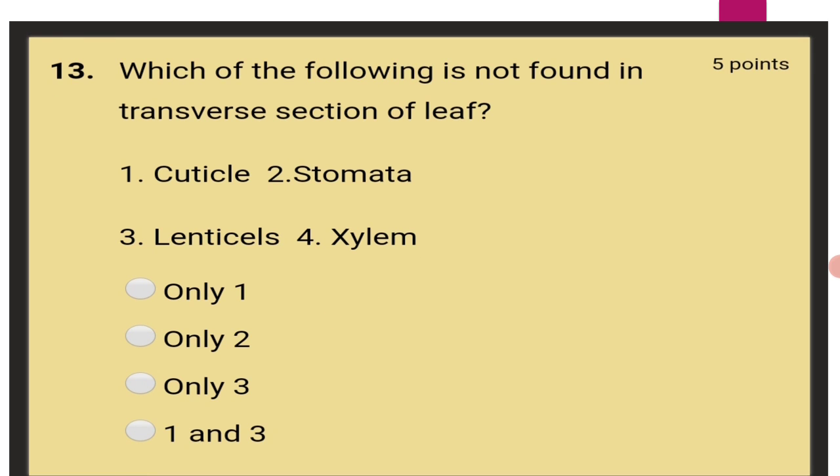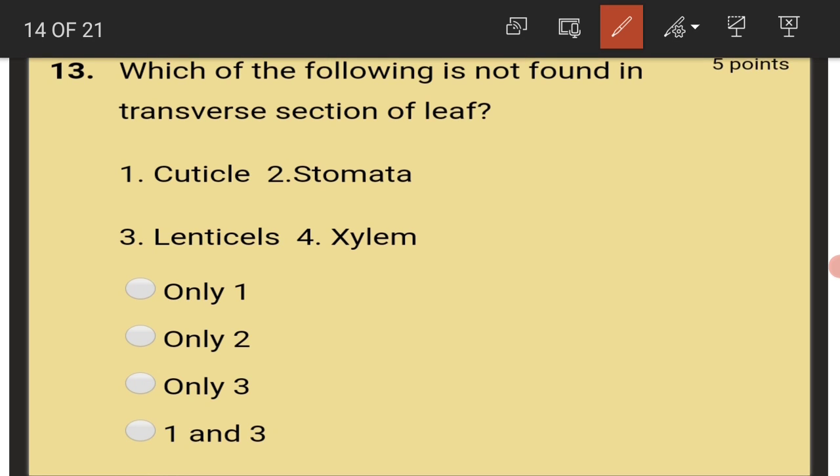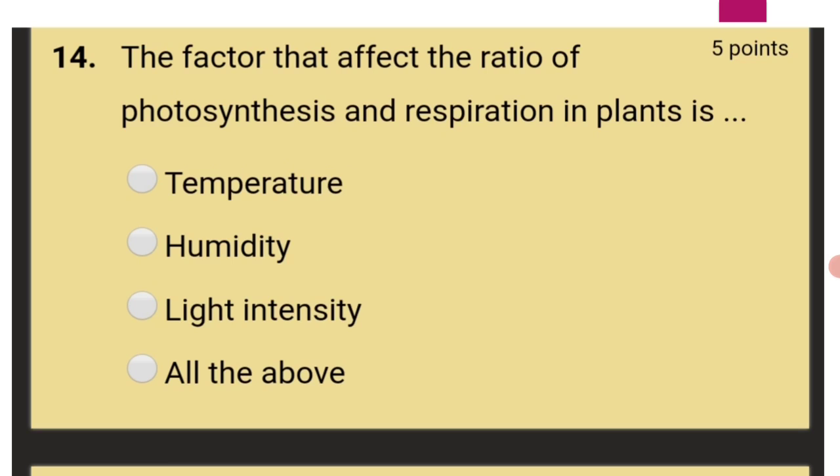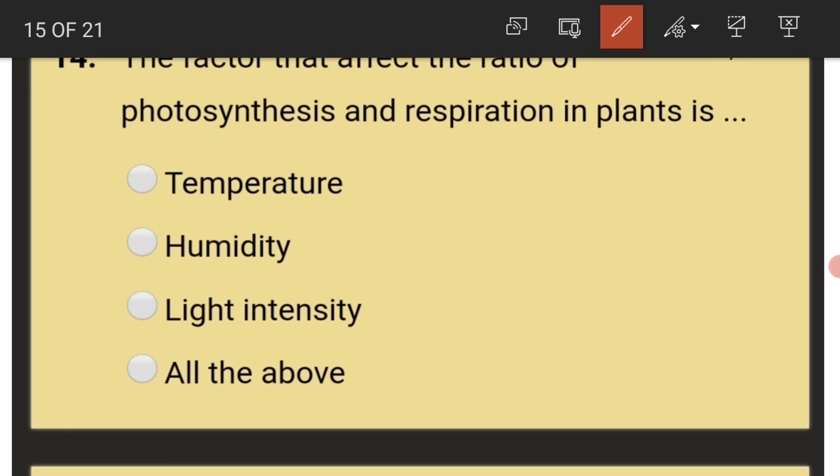Which of the following is not found in transverse section of leaf? That is lenticels, only 3. The factor that affect the ratio of photosynthesis and respiration in plants is temperature, humidity, light intensity. All the above is the answer.